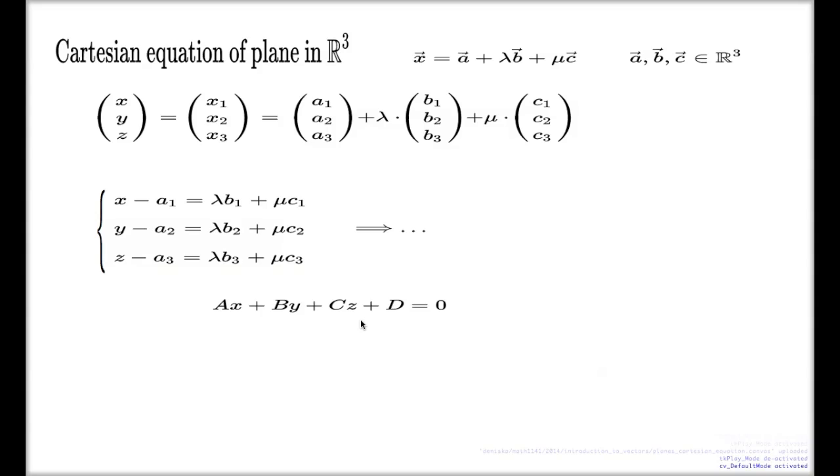These three coefficients, if you combine them in a vector, in a vector like this. Okay, we will see this later in more details but just for now remember that these three, a, b and c, the geometrical meaning of these coefficients as a vector, it will be the vector perpendicular to the plane.